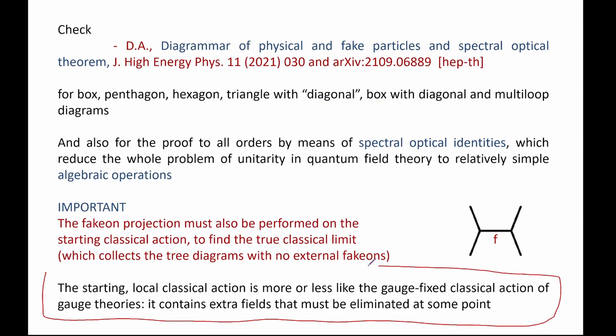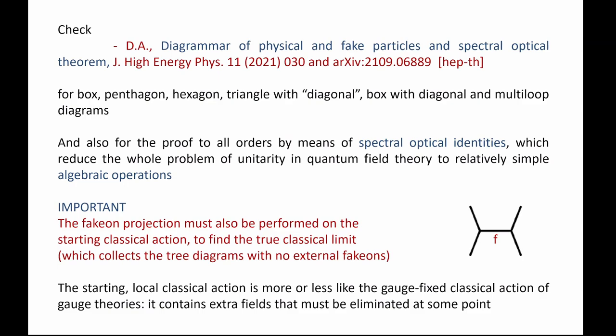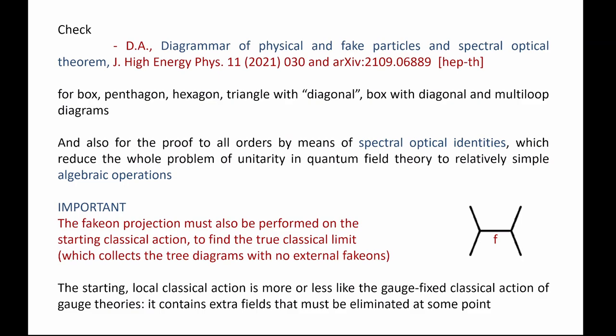Think of a gauge-fixed action: you have Faddeev-Popov ghosts and longitudinal/temporal components of gauge fields, and you don't consider that as the classical action — you first eliminate the redundant degrees of freedom. Here you have to do the same, but with different rules because the projection is consistent not because of gauge symmetry, but because of this diagrammatics. For quantum gravity, you start from the classical action with three propagating fields: the graviton, the scalar inflaton with mass around 10^13 GeV, and the spin-2 with mass m and wrong-sign kinetic term, which must be quantized as a faicon.